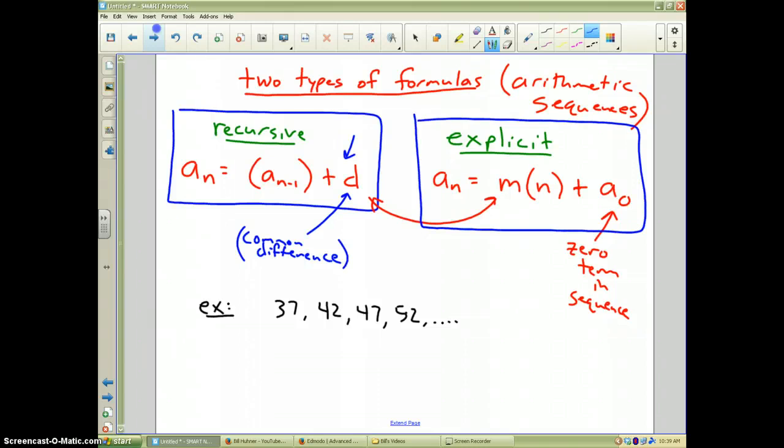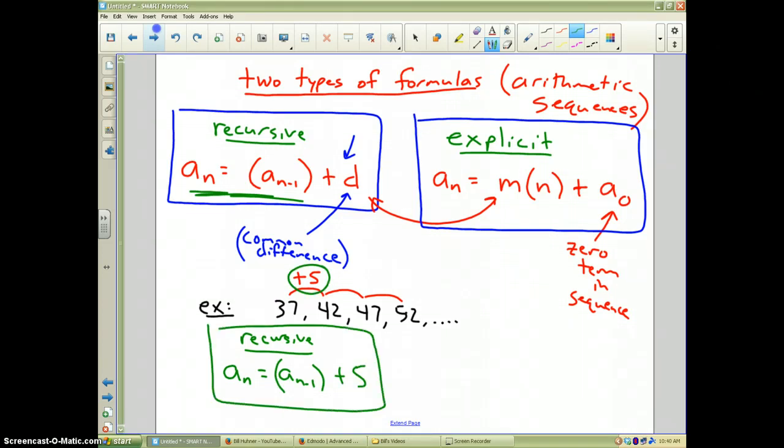Let's do an example: 37, 42, 47, 52. I want to write both formulas. Well, what you first do is you find d, the common difference. Well, these numbers are going up by 5. Then very simply, the recursive formula, it says right here, is a sub n, the new term or the next term, is equal to the prior term, a sub n minus 1, and the common difference is plus 5. You're done. There's your recursive formula for this arithmetic sequence.